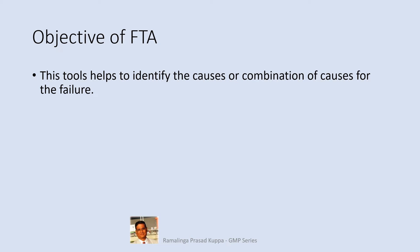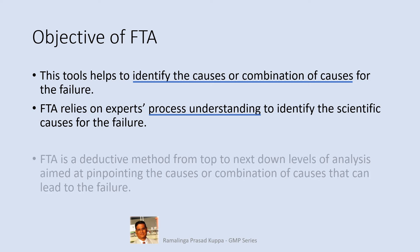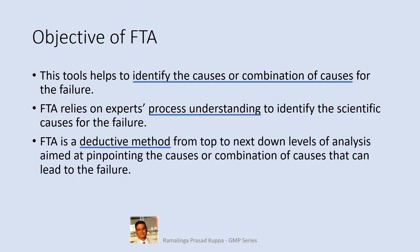The objective of FTA is to identify the causes or combination of causes for a failure. The cause could be a single cause or a combination of several interconnected causes. FTA relies on expert process understanding to identify scientific causes for failure — process knowledge and product knowledge are essential. No external reasoning is accepted; it should always be scientific. External means a generic statement or reasoning that is not scientific.